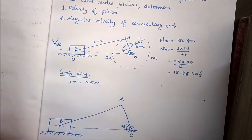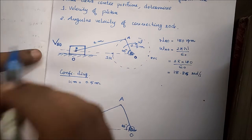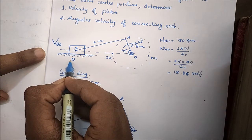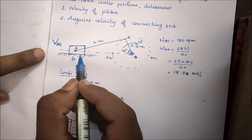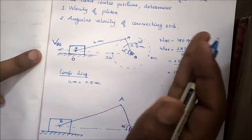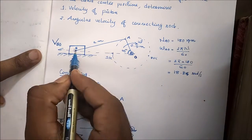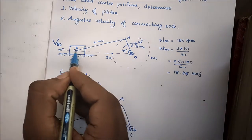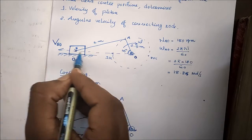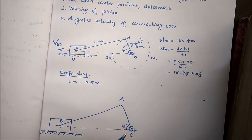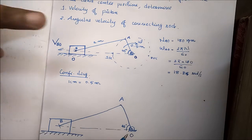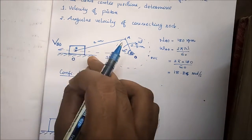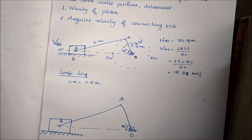The fixed link is the surface. The slider has reciprocatory motion — it is not a translatory motion, it is not a rotation. The line of action is parallel.